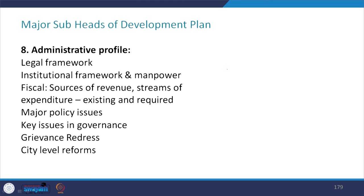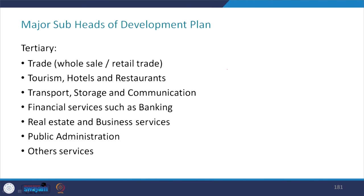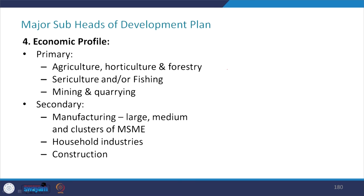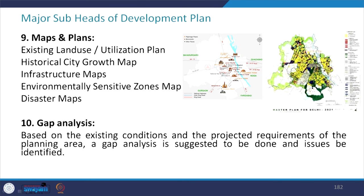The URDPFI guidelines further provide guidance to document the administrative profile, covering legal framework, institutional framework, fiscal expenditure, major public issues, key issues in governance, regulations, grievances redress and city-level reforms. However, this is not covered in this particular volume of the Bhopal Development Plan. The guidelines also suggest documenting the economic profile, looking at primary and secondary economic patterns, and also suggest the range of plans and maps to be prepared. Overall, a wide range of maps has been developed for the plan.